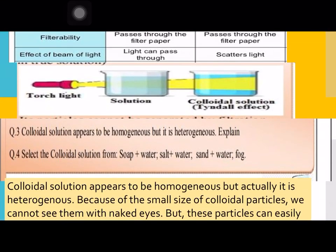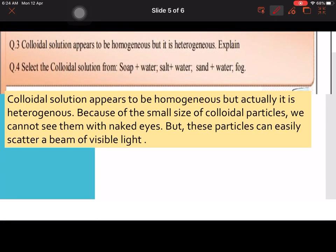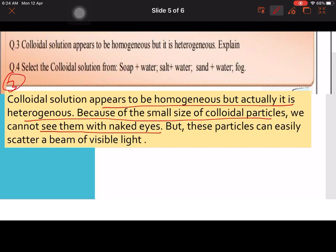Third question: Colloid appears to be homogeneous but it is heterogeneous, explain. Colloidal solution appears to be homogeneous but actually it is heterogeneous. Because of the small size of colloidal particles, we cannot see them with naked eye, but these particles can easily scatter the beam of light.